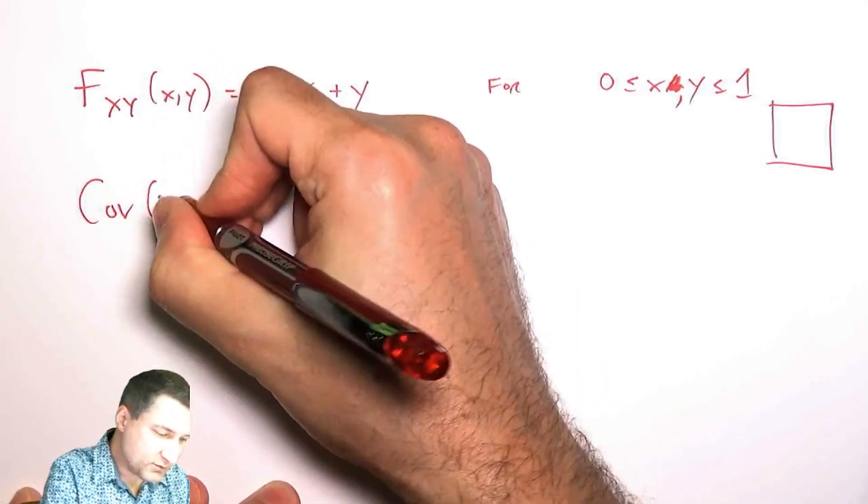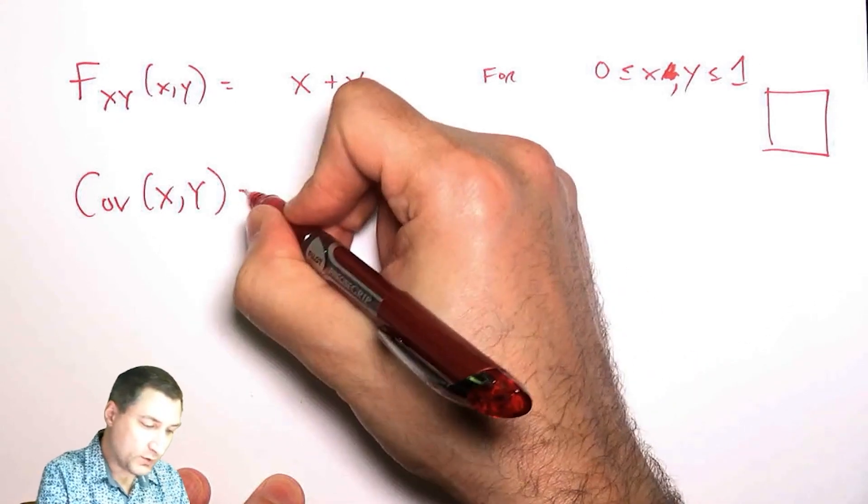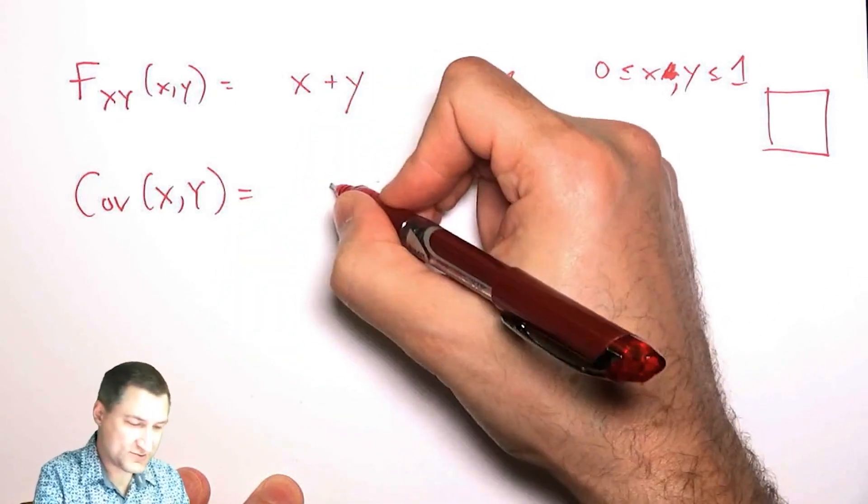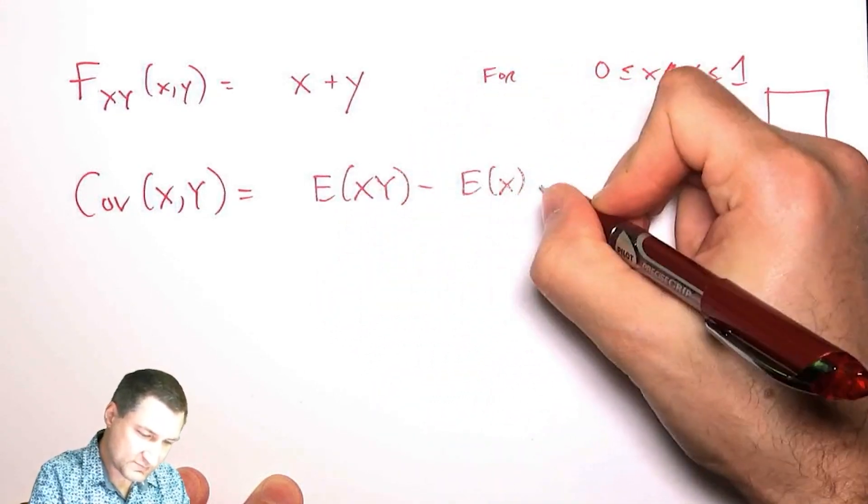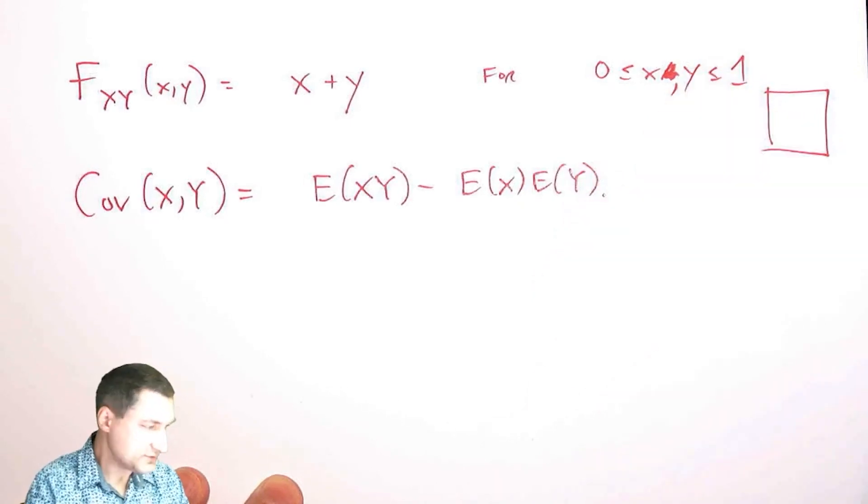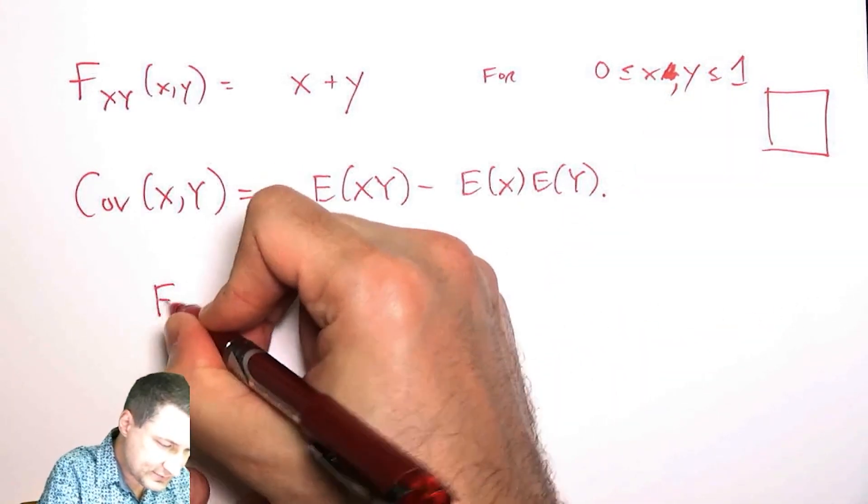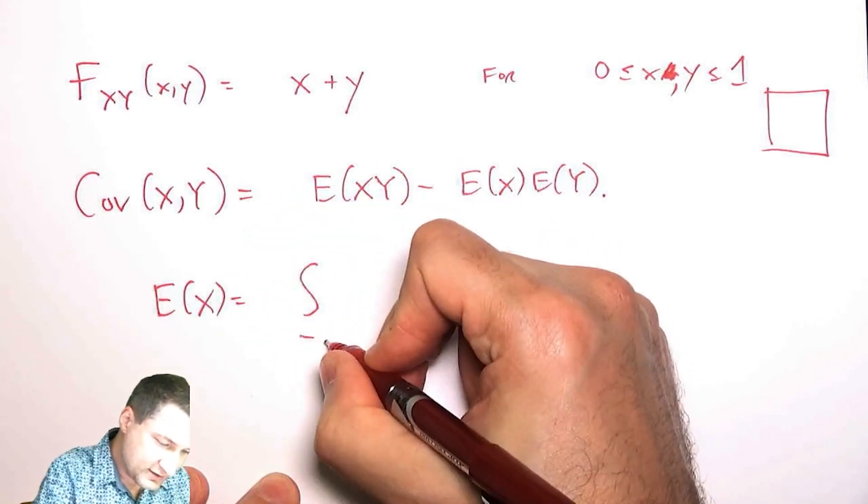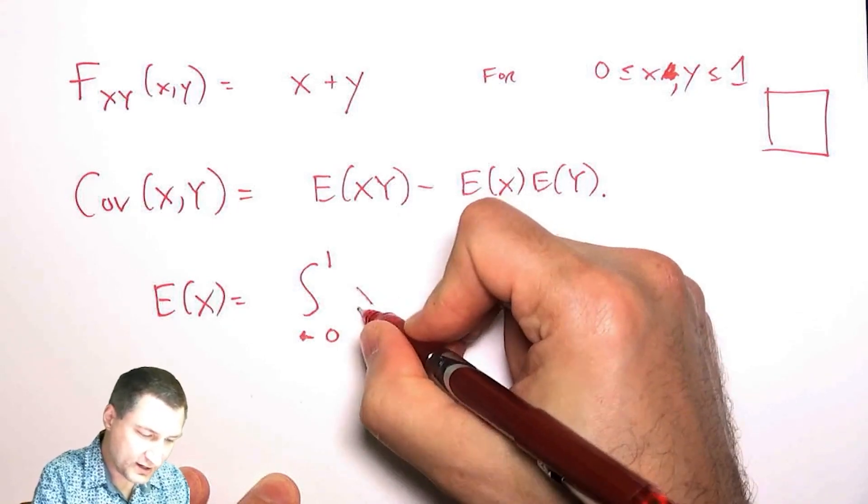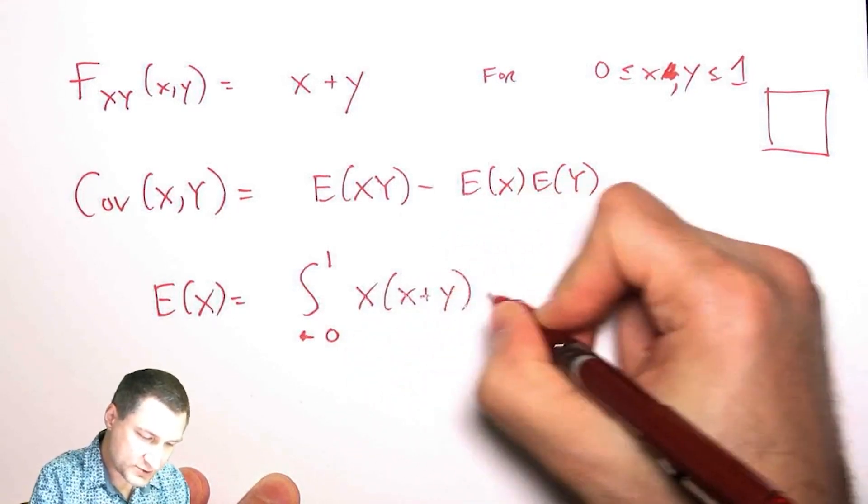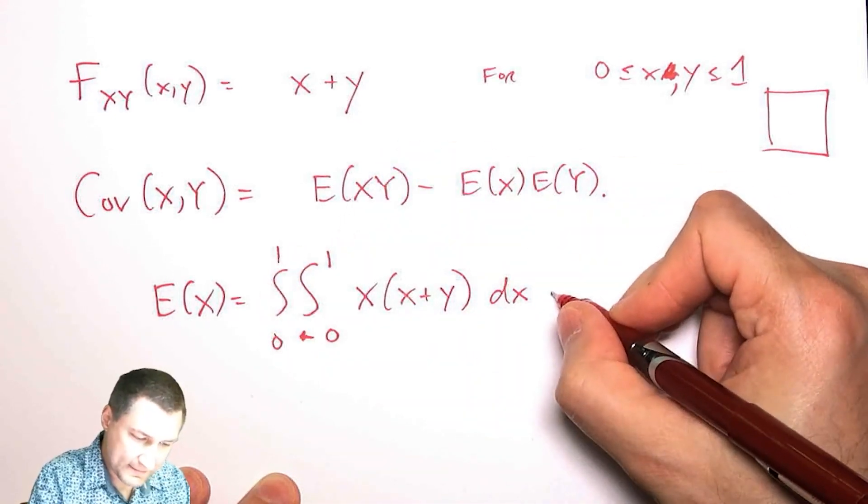What if I want to know what is the covariance of this pair of random variables? Well, I would need to compute two things. I basically need to compute this part, and I need to compute this part. So let's do the expected value of X. The expected value of X is just the integral from minus infinity to infinity, really though X only ranges from zero to one, of X times the joint DX, I guess I have to do this on both sides, DX, DY.